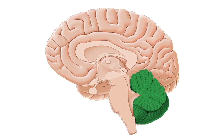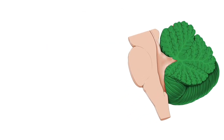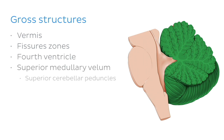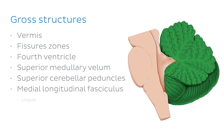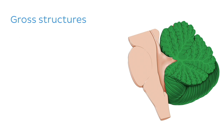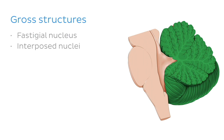First off, we're going to do a quick review of what the cerebellum is, looking at the following gross structures: the vermis, the various fissures and zones, the fourth ventricle, the superior medullary velum, the superior cerebellar peduncles, the medial longitudinal fasciculus, and lastly the lingula. We'll then review some of the nuclei found deep in the cerebellum, including the fastigial nucleus, the interposed nuclei, and the dentate nucleus.